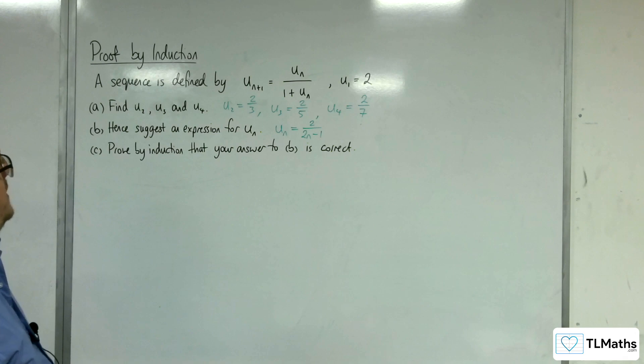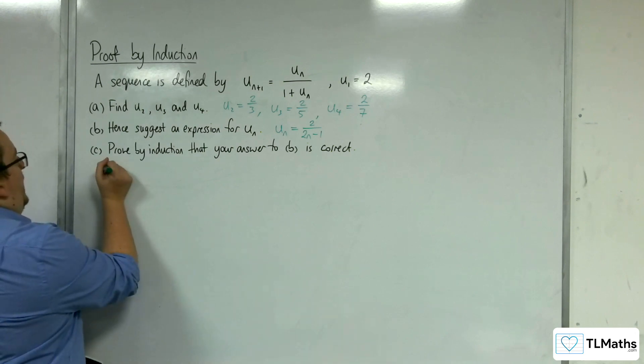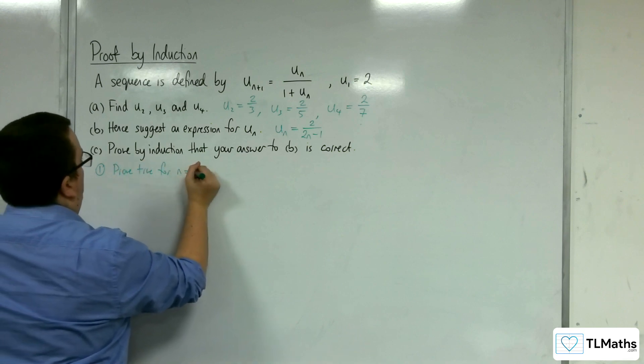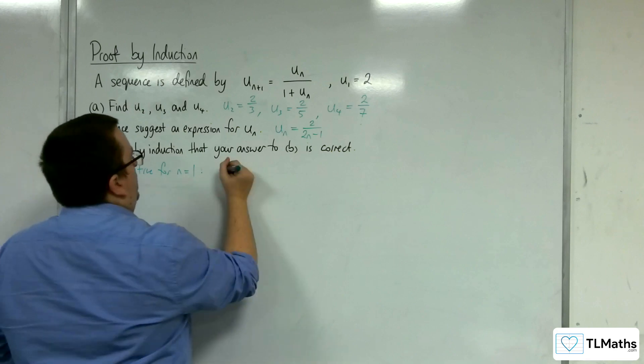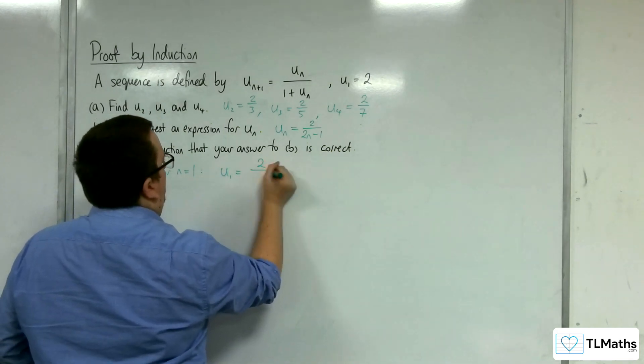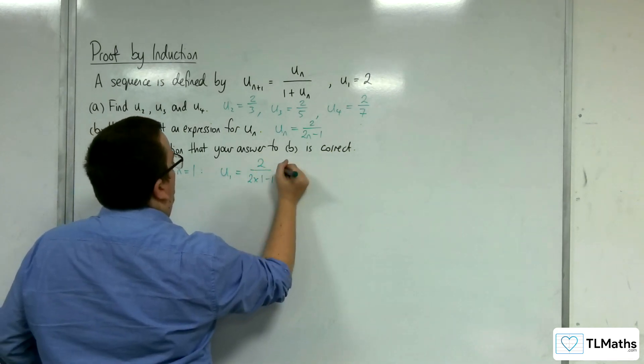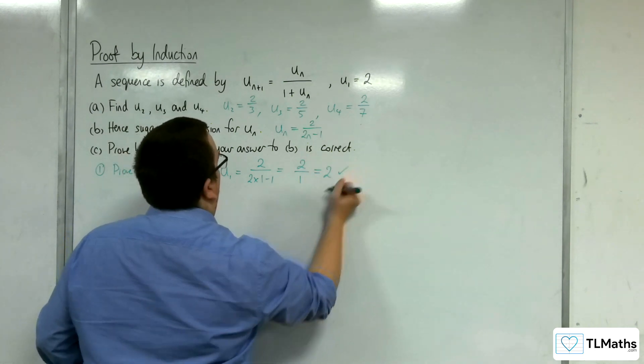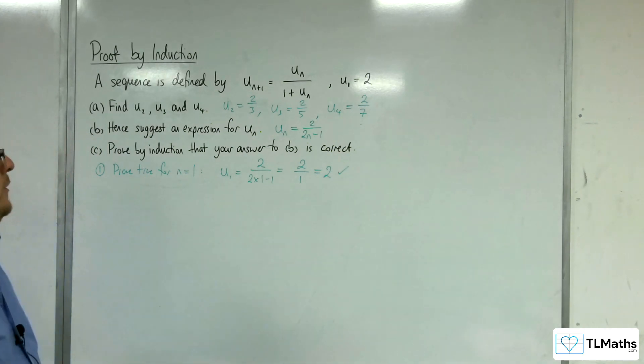We're going to prove by induction that the answer is correct. Stage 1: proved true for n equals 1. So u(1) is 2 over 2 times 1 take away 1, which is 2 over 1, which is 2, which is as we've required. u(1) is 2.